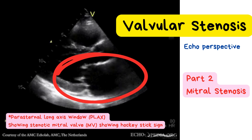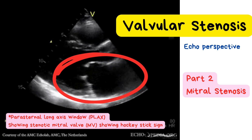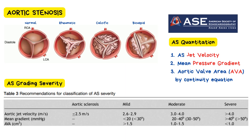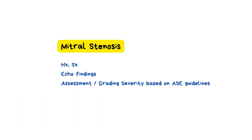Welcome back to our stenosis series. In part one, we talked about aortic stenosis, what causes aortic stenosis, and quantitation based on ASE guidelines. If you missed it, you'll find the link to our aortic stenosis video in the description. Now in part two, we're shifting gears to focus on mitral stenosis. We'll break down how it affects blood flow, what to look for on ECHO, and how to apply the ASE guidelines in real clinical cases.